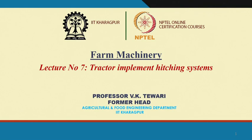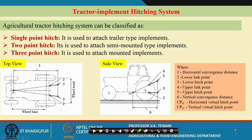You might have seen how to hitch an implement in the field, which was described earlier. Now we will talk of certain other aspects which are very important from an academic point of view and from the point of view of researchers and designers. In this slide I have shown the different hitching points: single point, 2-point, and 3-point. Two-point hitches are generally for larger equipment and are not in vogue in Indian conditions, so we have single point and 3-point.